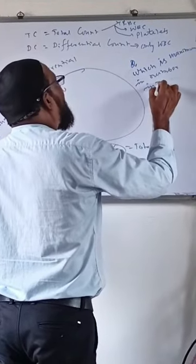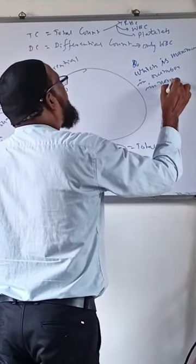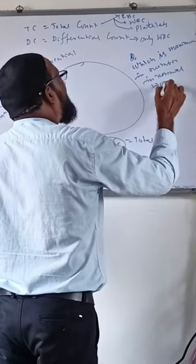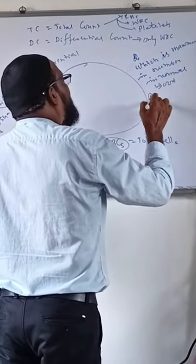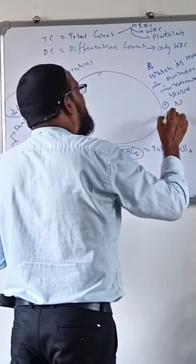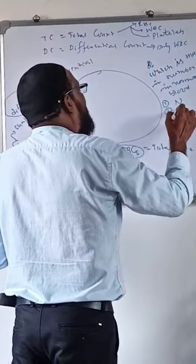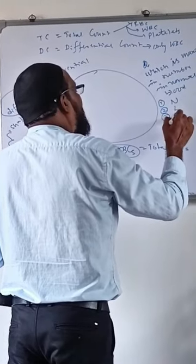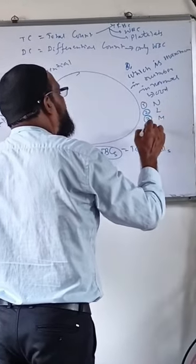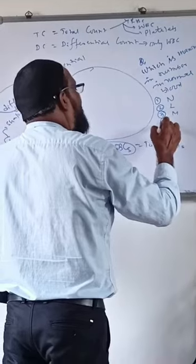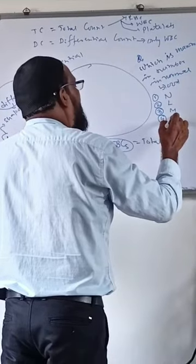This is the normal blood. It has neutrophils. It has lymphocytes. It has monocytes.